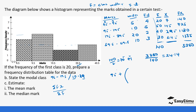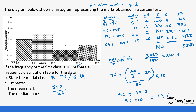The median formula is: lower limit + [(n/2 − cumulative frequency of preceding class) ÷ frequency of median class] × class width. So: 9.5 + [(140/2 − 20) ÷ 50] × 10 = 9.5 + [(70 − 20) ÷ 50] × 10 = 9.5 + [50 ÷ 50] × 10 = 9.5 + 1 × 10 = 9.5 + 10 = 19.5. So the median mark is 19.5.